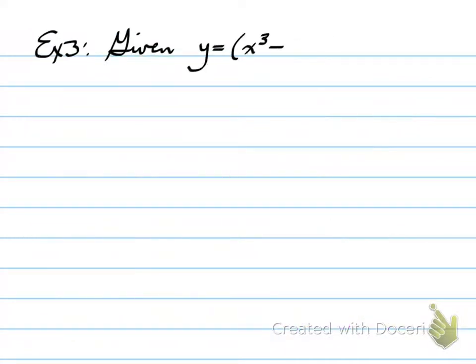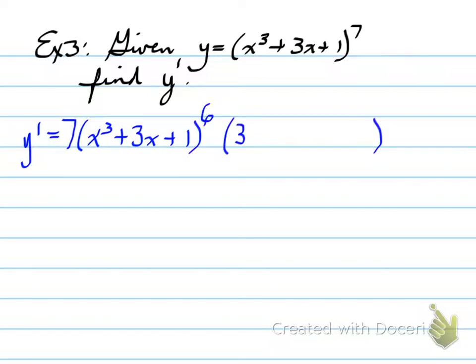Sample number 3. y equals a function and you're asked to find the derivative. This is where we need to take the power of a function rule. So the derivative is equal to 7 times, so 7 is the exponent. That goes to the front. The base minus 1 multiplied by the derivative, which is 3x squared plus 3. That's all.